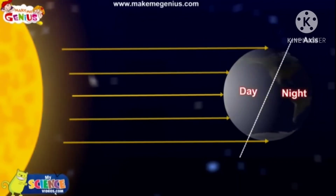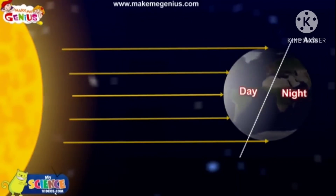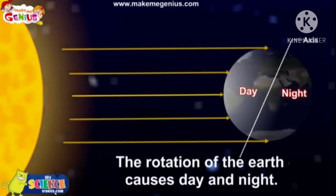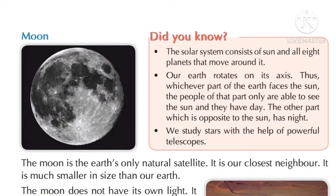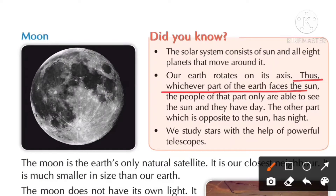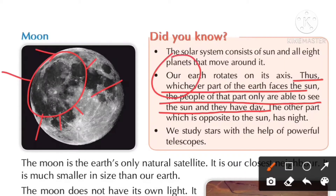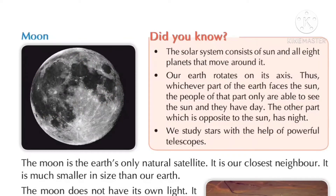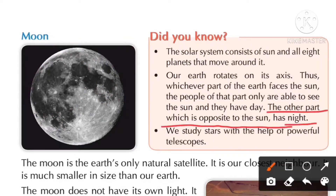When the earth rotates, day changes to night and night changes to day. So the rotation of the earth causes day and night. Whichever part of the earth faces the sun, the people of that part are able to see the sun and they have day. The other part which is opposite to the sun has night.